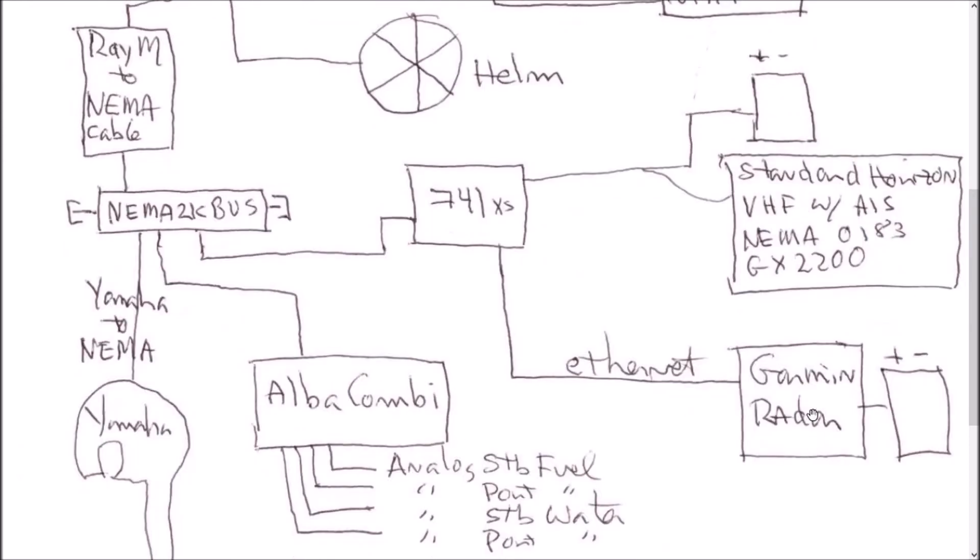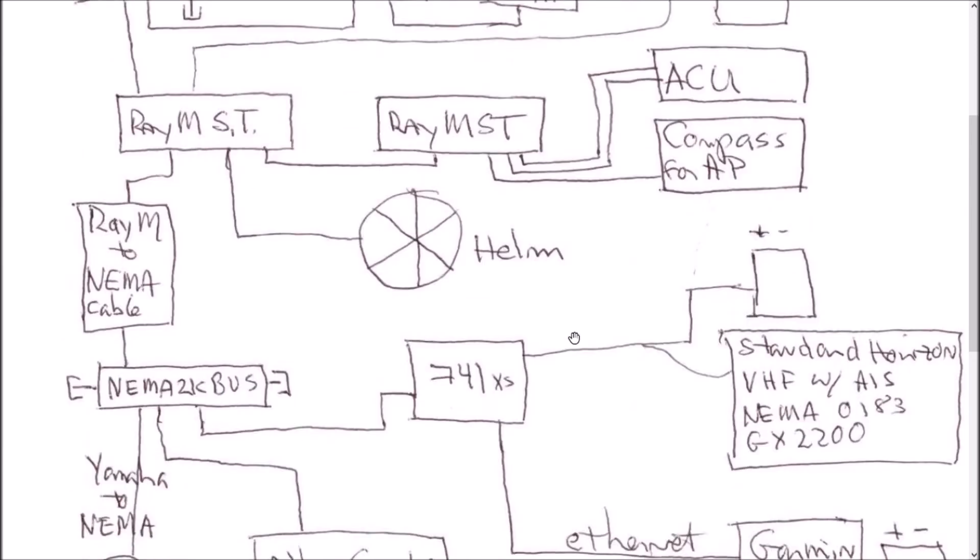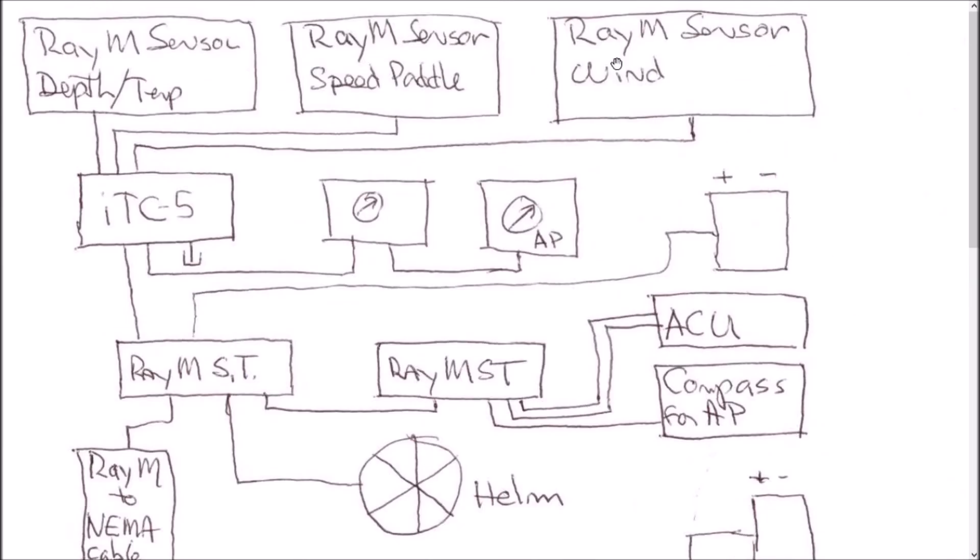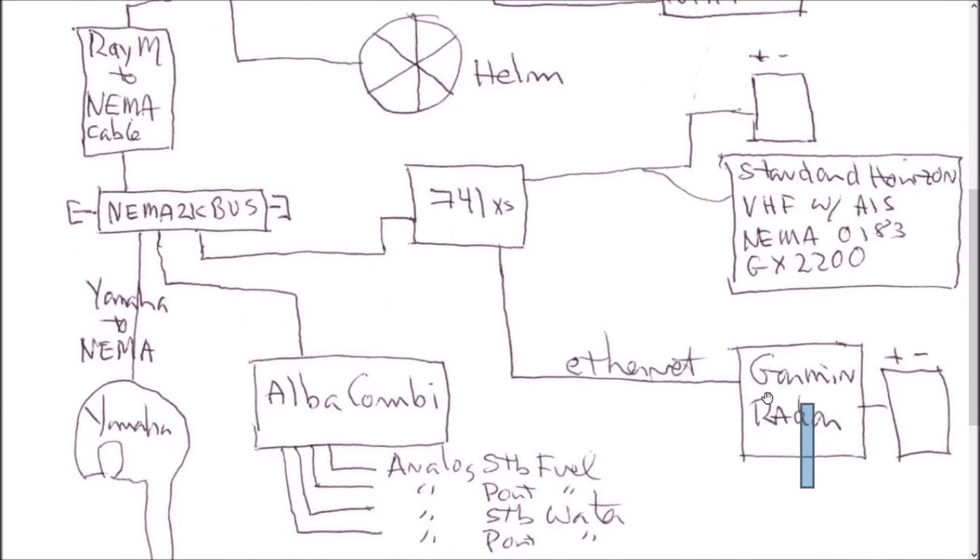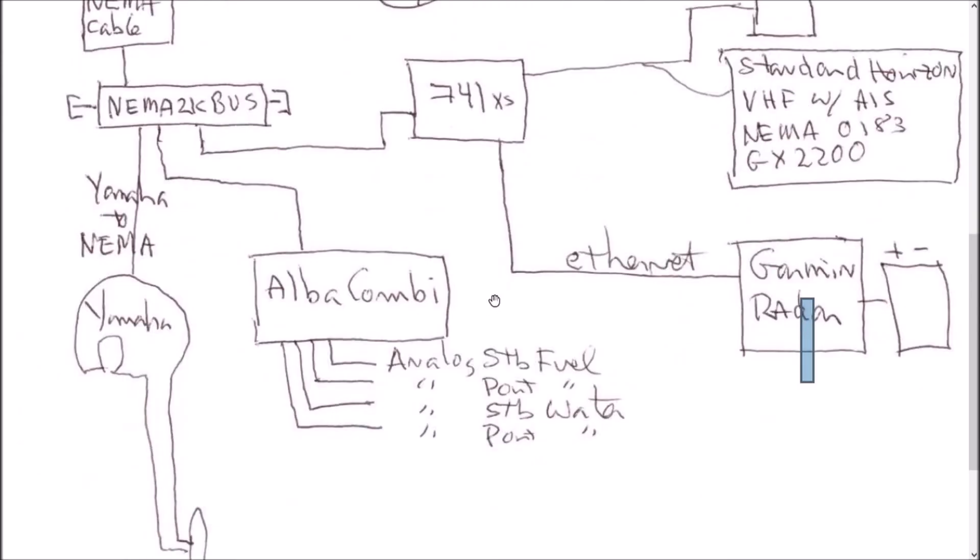The radar, radar has its own power once again. So now we've got three different power sources, one for the radar, one for the 741, and one for all of the Raymarine stuff. The radar is connected via Ethernet into the 741XS.